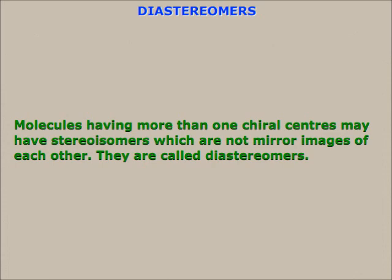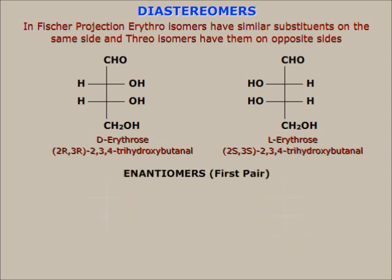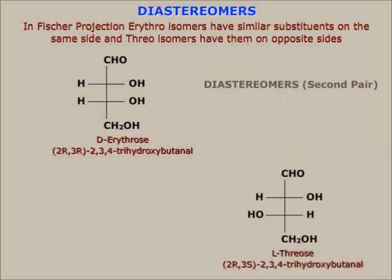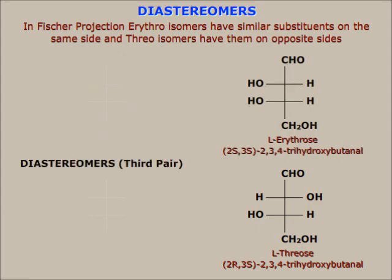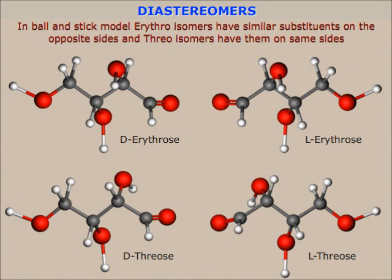Molecules having more than one chiral center may have stereoisomers which are not mirror images of each other. They are called diastereomers. For L-dose, which has two chiral centers, these two pairs of stereoisomers are enantiomers and are non-superimposable mirror images. These other four pairs are not mirror images and are diastereomers. This is the ball-and-stick model of the stereoisomers, and each chiral carbon can be designated R and S.